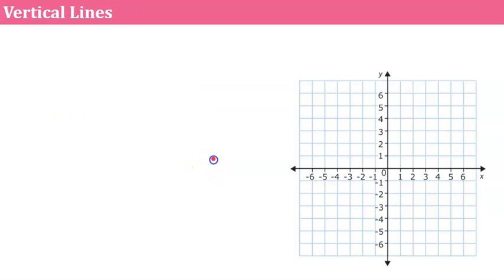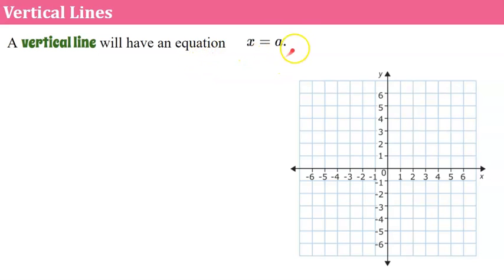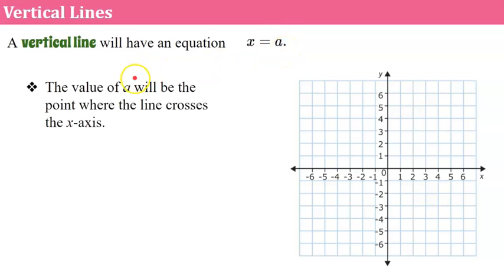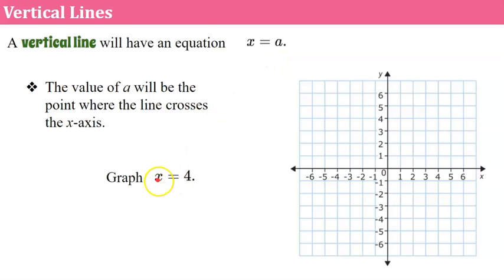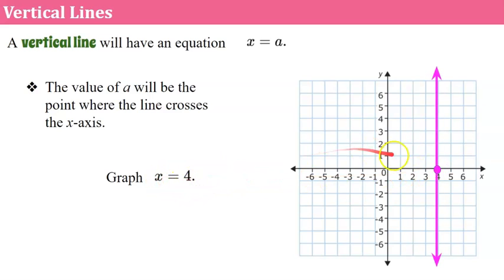Now let's talk about a vertical line. A vertical line will have an equation in the form x equals a number. The value of a will be the point where the line crosses the x-axis. Students often get confused because x is our horizontal axis, but x equals a number is a vertical line. If we're asked to graph x equals 4, we go where x equals 4 and put a point there on the x-axis. In order to draw a line through just that point on the x-axis, it has to be a vertical line.